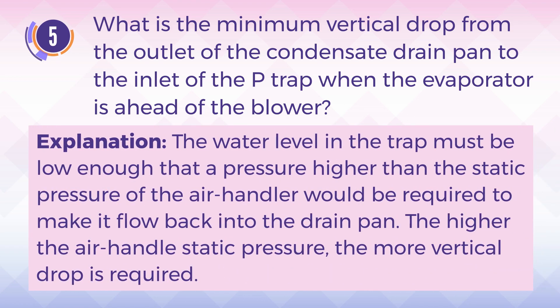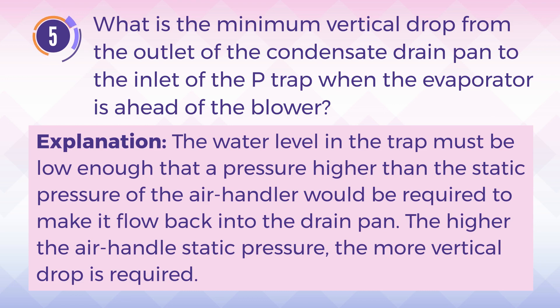Explanation: The water level in the trap must be low enough that a pressure higher than the static pressure of the air handler would be required to make it flow back into the drain pan. The higher the air handler static pressure, the more vertical drop is required.